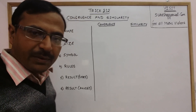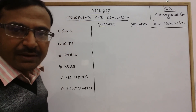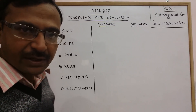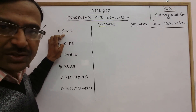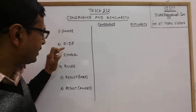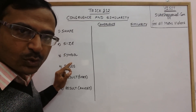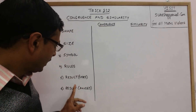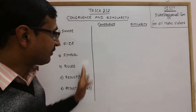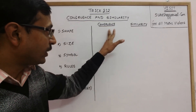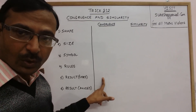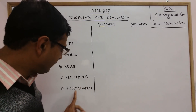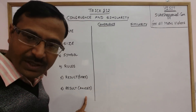We will be categorizing the differences between these two types of triangles on the basis of their shape, their size, the symbol used to represent them, the rules, and the results — that is, after we prove congruence and similarity, what results are derived on the basis of the sides and what results are derived on the basis of the angles.